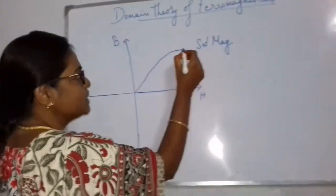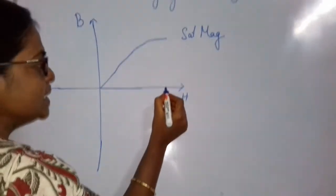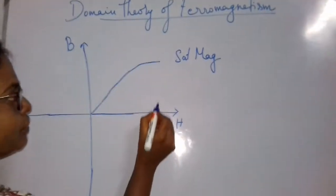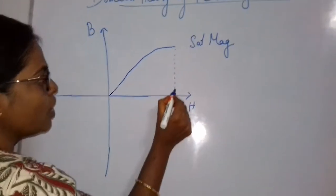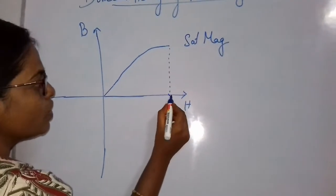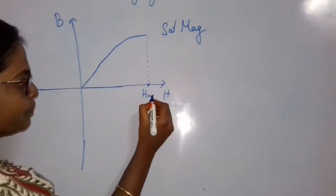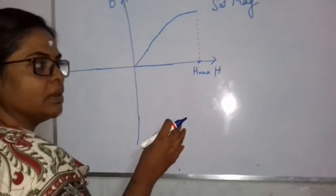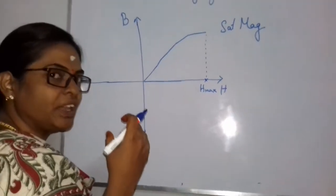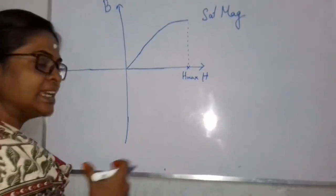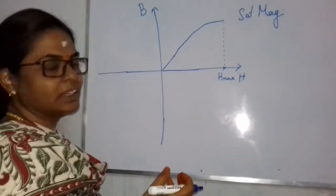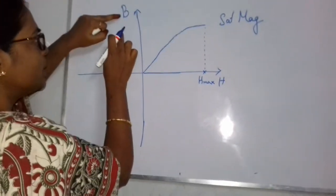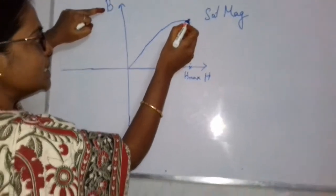At the saturation point, even though we increase the field to a strong value, B will not increase further. We call this point H maximum. Now what we do is slowly decrease the magnetic field, measuring B simultaneously.